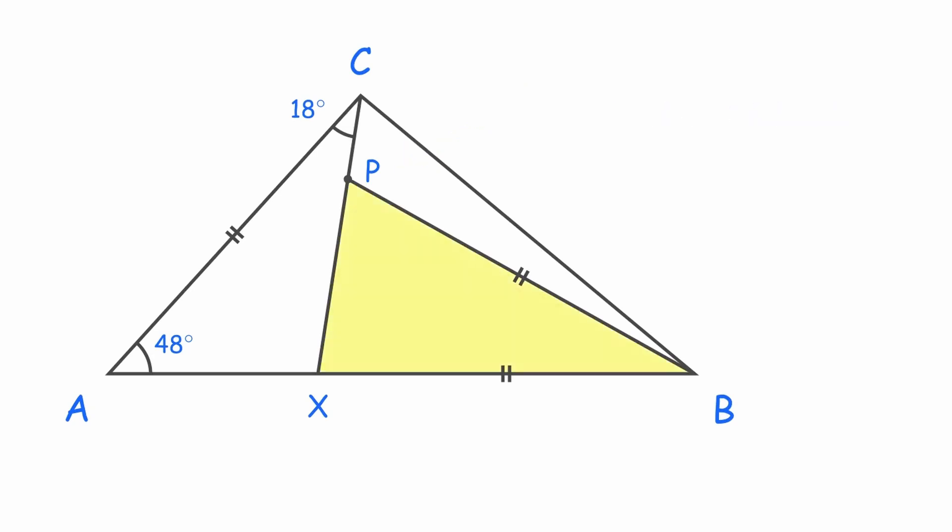Focus on triangle PBX. Angle PXB is the sum of angle ACX and angle CAX. The sum of opposite interior angles of the triangle equals the exterior angle. That's 18 plus 48, which gives us 66 degrees.